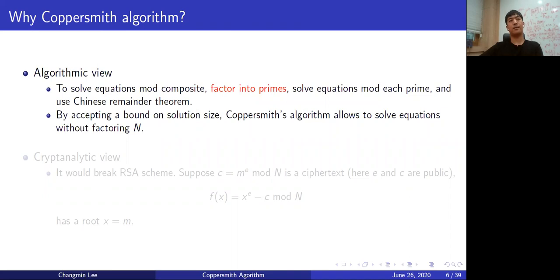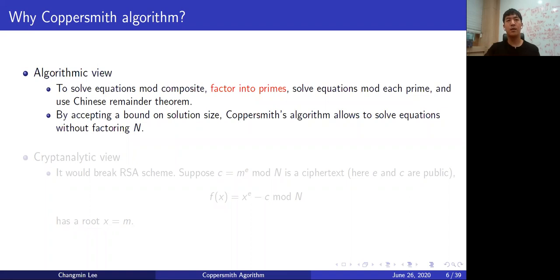Why is the Coppersmith theorem interesting? Normally, to solve equations over composite modulus, we need a couple of steps: factor into primes, solve the equations over each prime modulus, and use the Chinese Remainder Theorem to get a solution modulo N. My point is that getting all solutions is as hard as factorization, and factorization is classically known to be hard. That's the reason why the Coppersmith algorithm is interesting — if we accept a bound on solution size, we can find all small solutions without factorization.